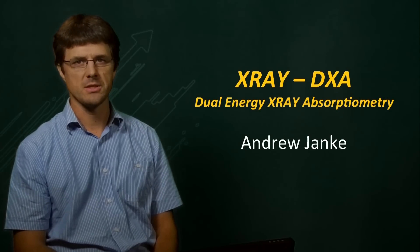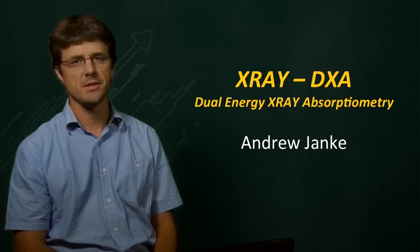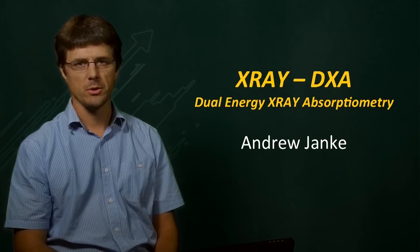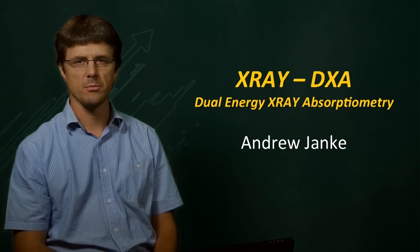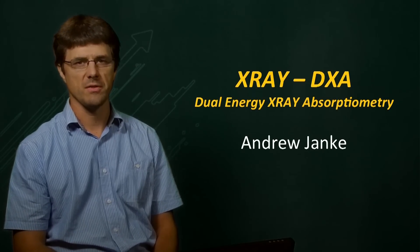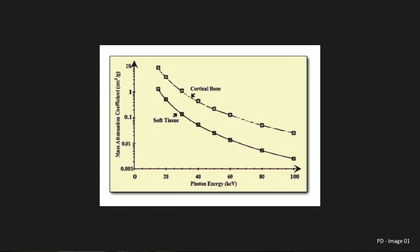X-rays penetrate body tissue at differing rates depending upon their intensity. Techniques such as DXA or DEXA exploit this phenomenon and use subtraction of multiple scans to obtain estimates of bone mineral density and fat content. DXA, or Dual Energy X-ray Absorptometry, uses two X-ray images of different energy. A soft tissue absorption image is subtracted from a higher energy bone image in order to estimate bone density to a high degree of accuracy.